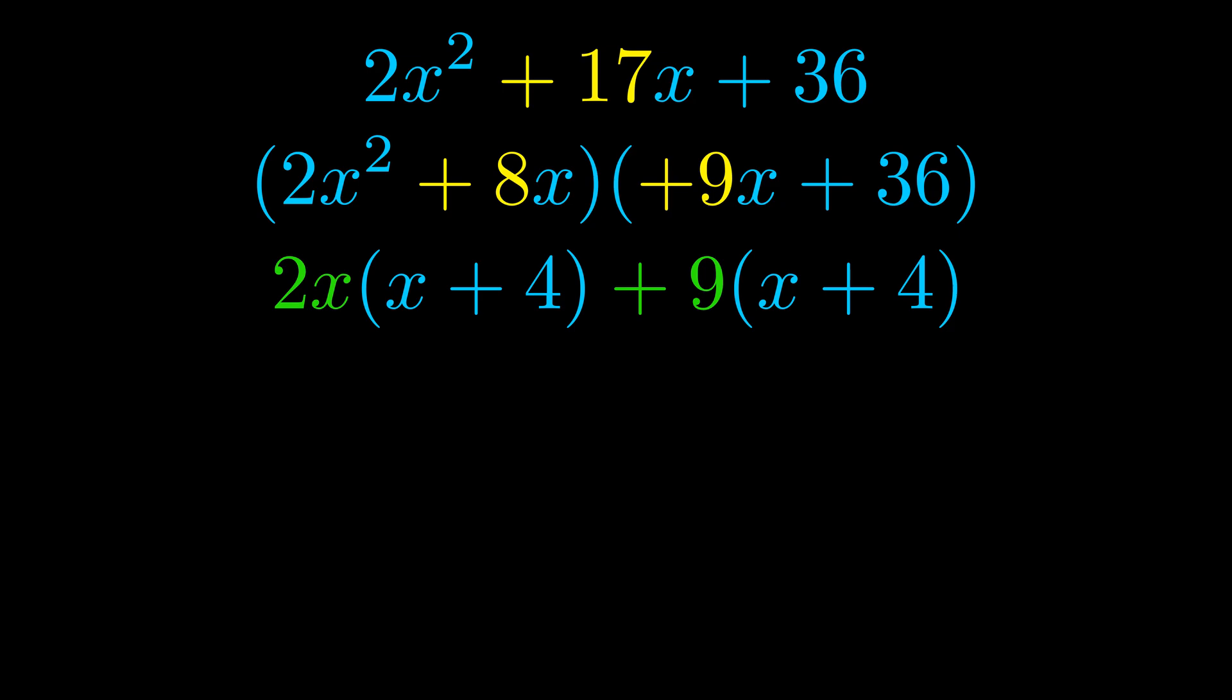Notice also how what remains inside of the parentheses is the same in both cases. The blue values are the same. Those blue values will become one of our factors and we will combine the two green values, the GCFs that we pulled out, to get the other one. And that is our fully factored equation.